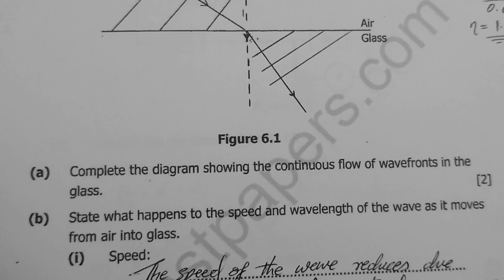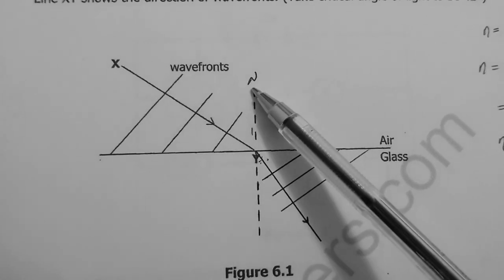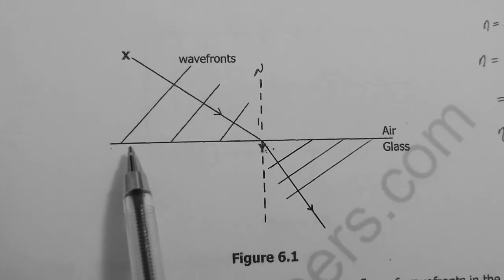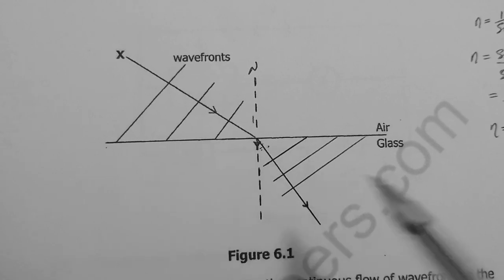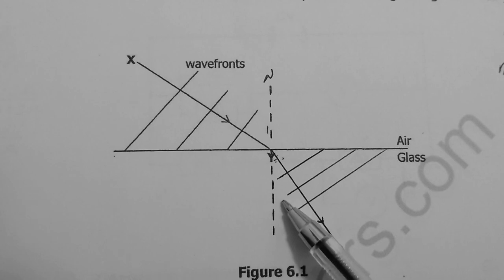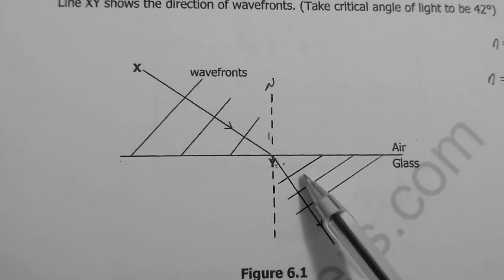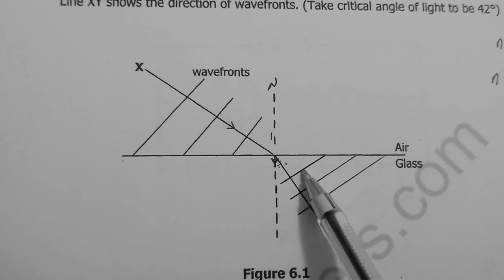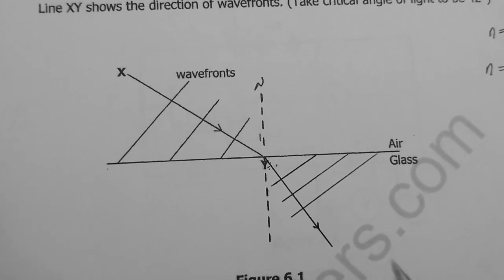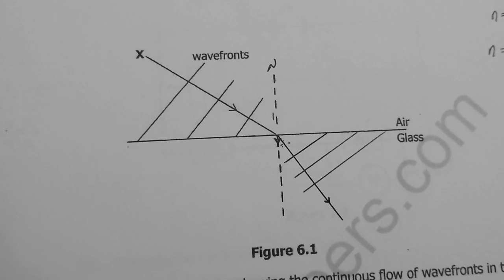I added the normal at right angles to the interface boundary. The angle of refraction is smaller than the angle of incidence, and the wavelengths in glass are shorter than the incident wavelengths. Light bends towards the normal when entering a denser medium. I've shown the ray with direction and wavefronts — I should get the mark from my drawing.